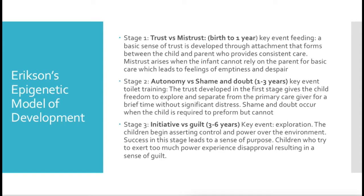Stage two is Autonomy versus Shame and Doubt, from one to three years of age. The key event is toilet training — somewhat similar to Freud's anal phase. The trust developed in the first stage gives the child the freedom to explore and separate from the primary caregiver briefly without significant distress. Unresolved issues from stage one can lead to shame and doubt when the child is required to perform but cannot.